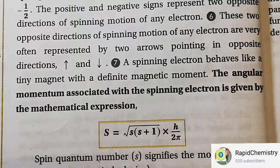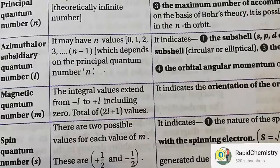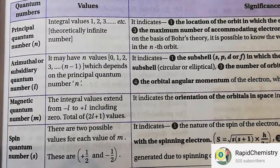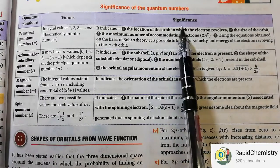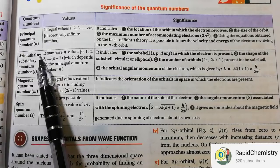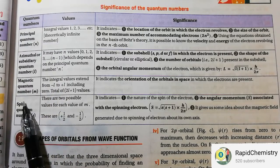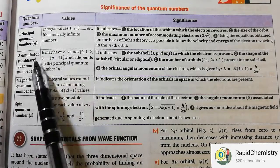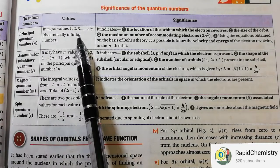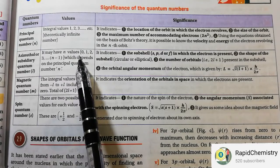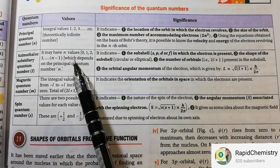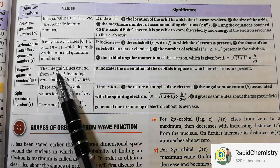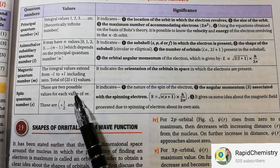Now let's summarize the significance of all quantum numbers. The four quantum numbers are: principal, azimuthal or subsidiary, magnetic, and spin. The principal quantum number has values 1, 2, 3, etc., and is independent from the other three. The azimuthal quantum number depends on N and ranges from 0 to N minus 1. The magnetic quantum number depends on L and ranges from minus L to plus L. The spin quantum number has only two values: plus half and minus half.